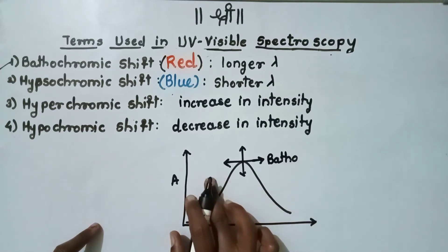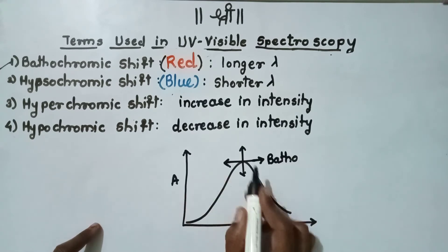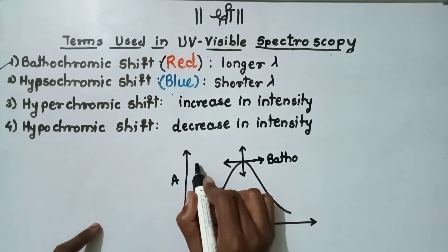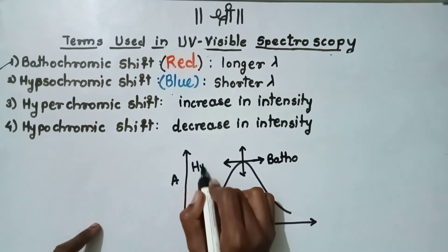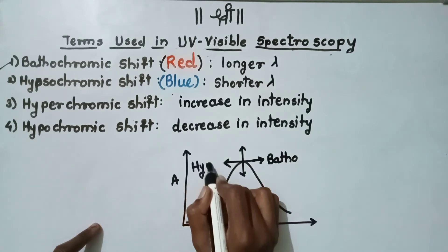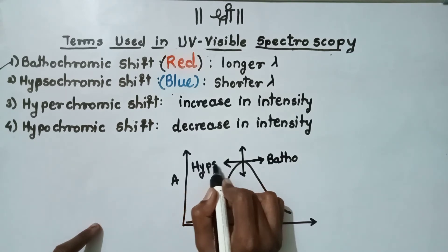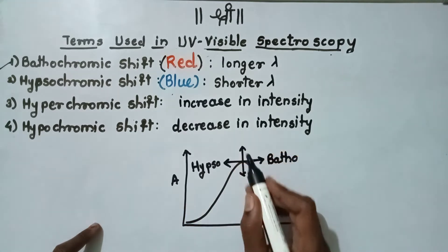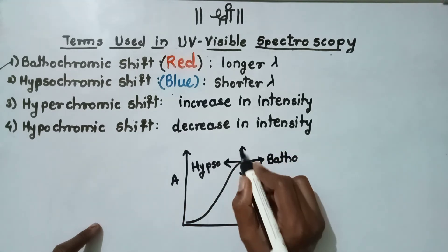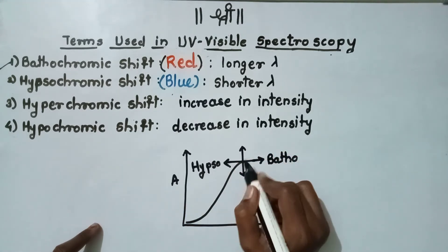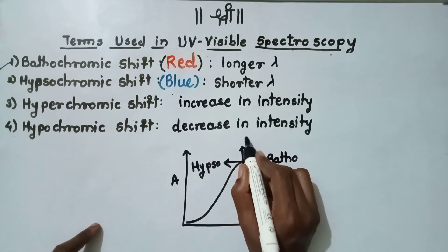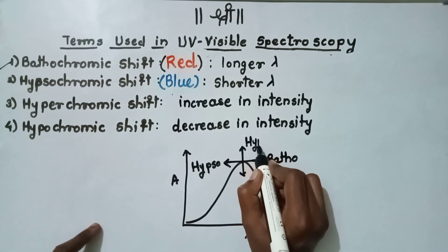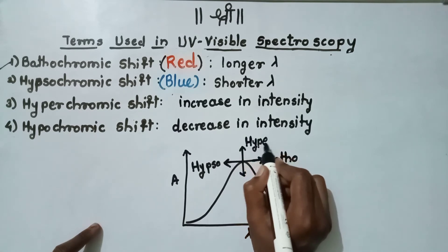When there is a shift in spectra towards the shorter wavelength, it is called as the hypochromic shift or the blue shift. When there is an increase in intensity of spectra, then it is called as the hypochromic shift.